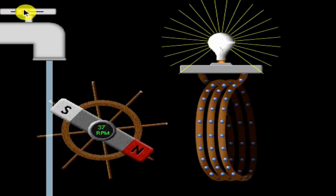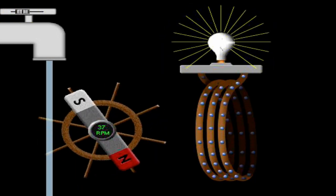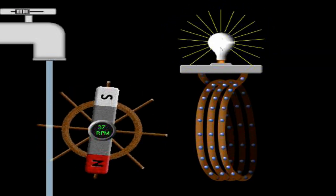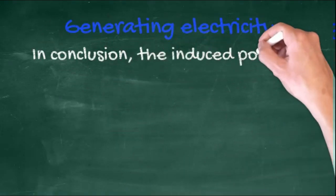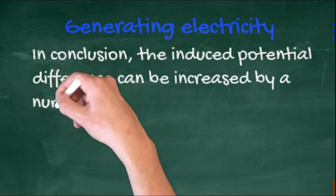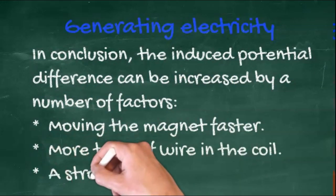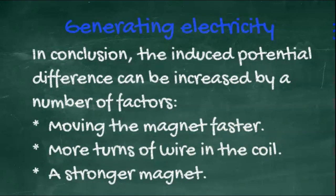A similar idea is used in a hydroelectric plant. The faster the wheel turns, the greater the potential difference generated, and the higher the current. In conclusion, the induced potential difference can be increased by a number of factors: moving the magnet faster, more turns of wire, and a stronger magnet.